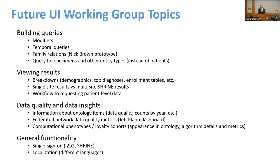For future working group topics, I mentioned modifiers and temporal queries. Nick Brown created a plug-in a couple of years ago for family relationships — how would you link a mother and a child if you're trying to understand genetic relationships? And queries for specimens or other entity types, and how would we visualize that? We also talked a lot about new kinds of breakdowns for viewing results, and different ways of going between a local query in I2B2 and a Shrine query where you're looking at the results of many institutions, with different ways of transitioning between them and workflows through requesting patient-level data.